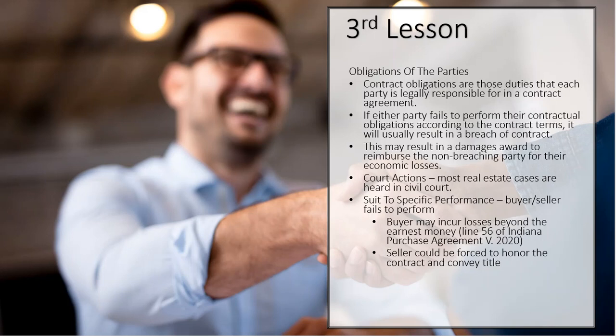In our purchase agreement, we always ask for a general warranty deed. A general warranty deed provides the buyer with the protection of knowing that the seller is going to surrender the property free of all liens and encumbrances — like taxes, the mortgage, any mechanics liens. There are some encumbrances that a seller cannot get rid of, like the easement of a shared driveway or a party wall easement if it's a condo. Those can't be gotten rid of.